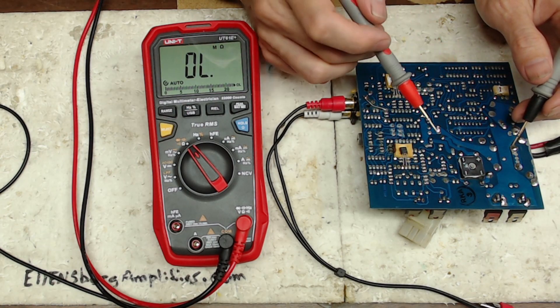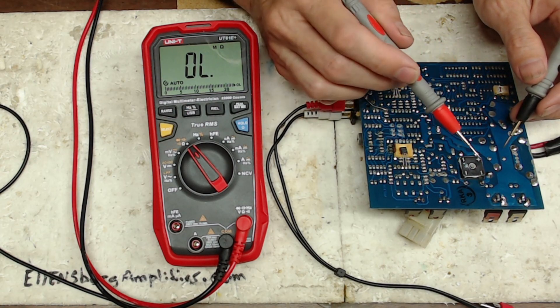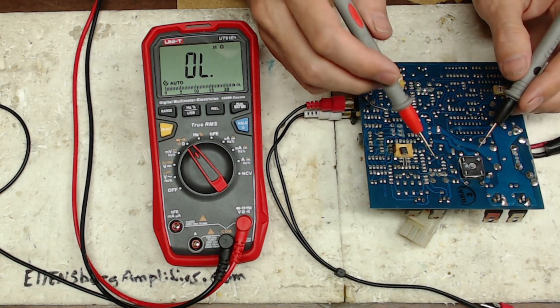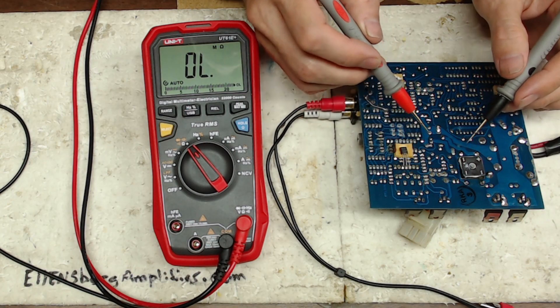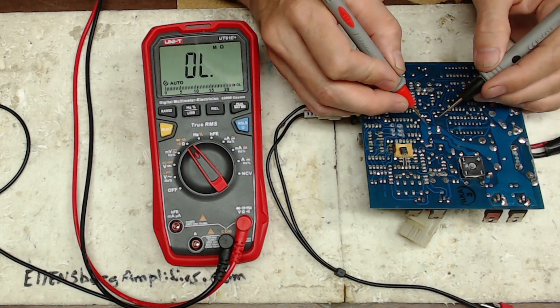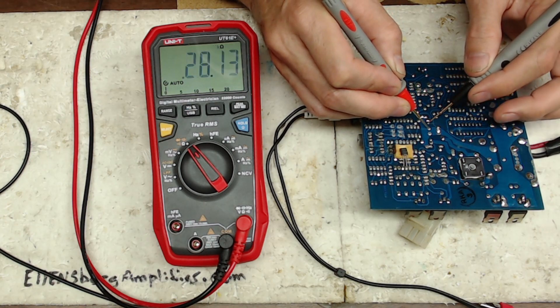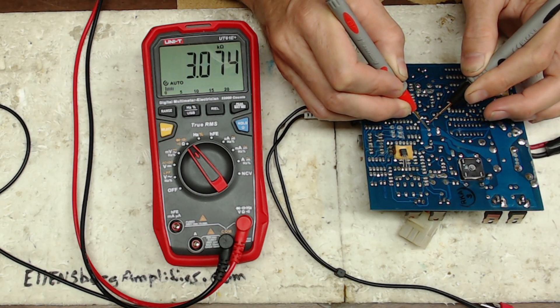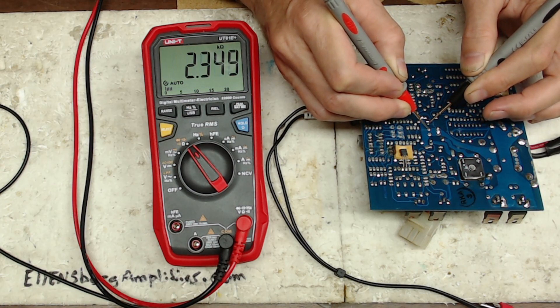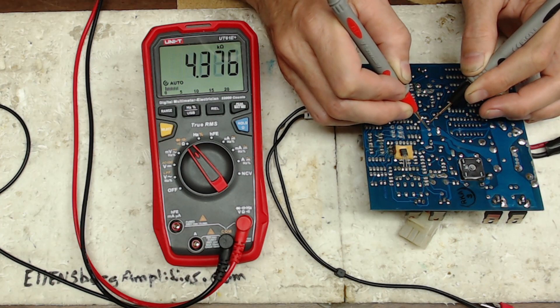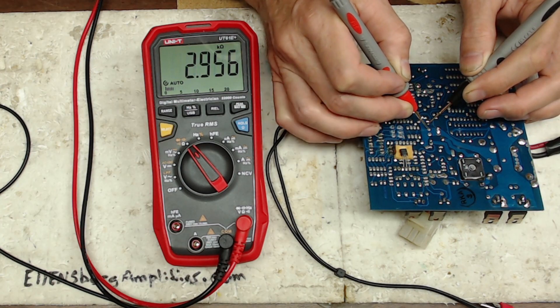So that told me there was a short in the negative rail, so I follow the negative rail here and I get to the rail capacitors. Here's the positive rail capacitor which is responding the way that I was seeing when I was checking the resistance between the positive and negative rail voltages at the rectifier.